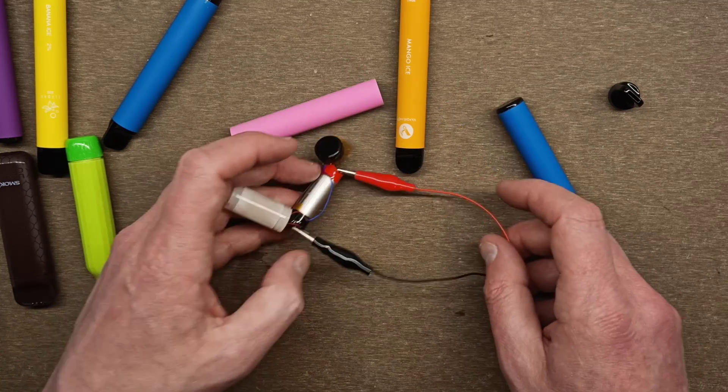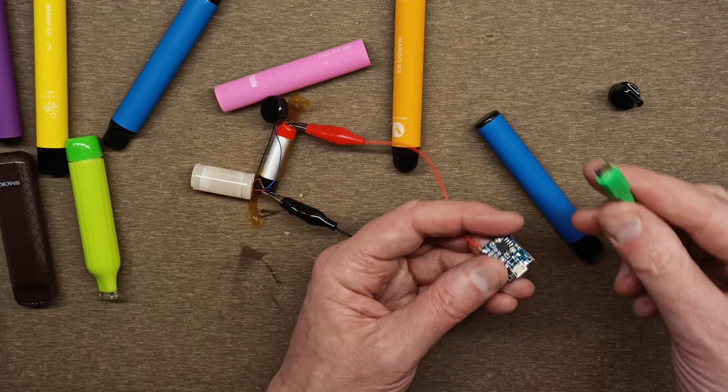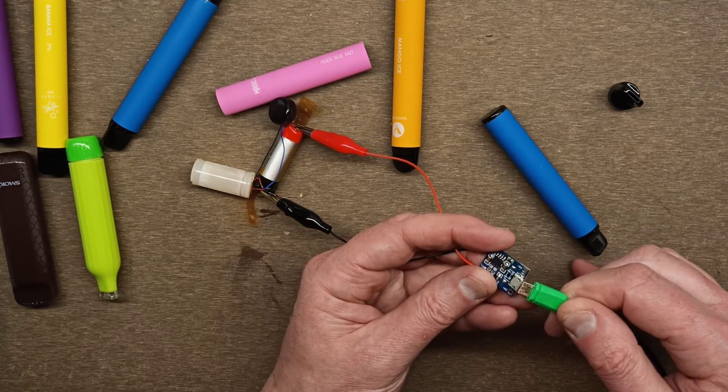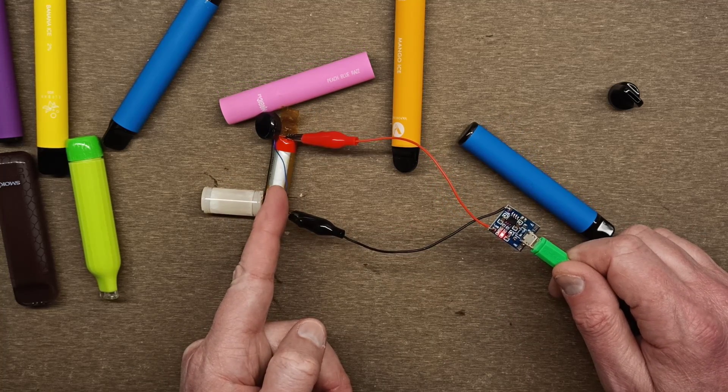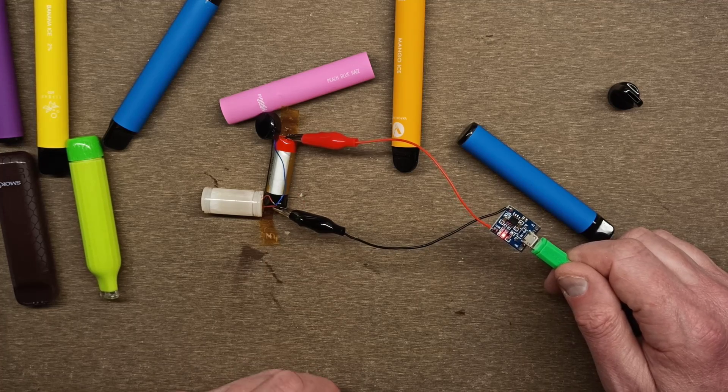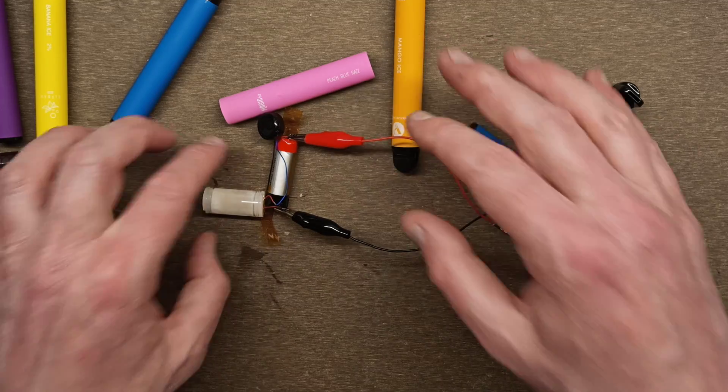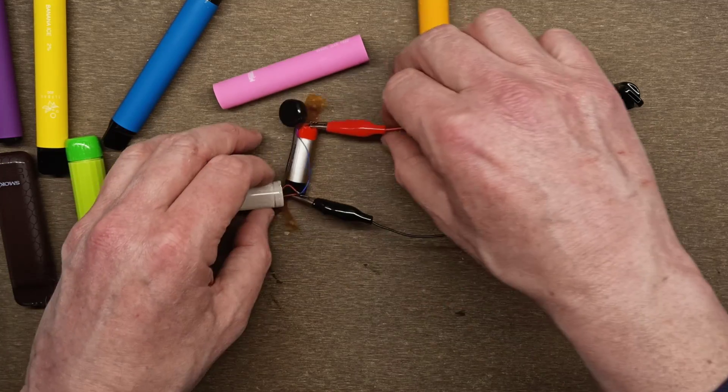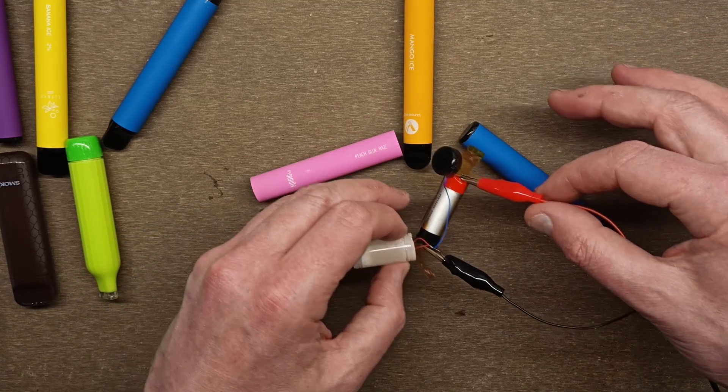Once you have connected your little recharging device, grab yourself a USB connector and plug it in. This cell is now being recharged and it will terminate when it gets to about 4.2 volts. That will basically reactivate the cell and you can use it in your own projects or use it for its intended purpose by refilling it.